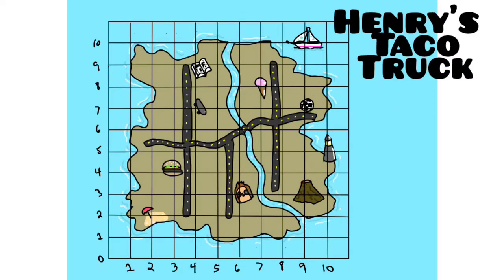Now I want you to pause the video and find a good ordered pair for Henry's taco truck. All right, let's check your work. So I started at the origin, the zero. I went over six on the x-axis, and up three on the y-axis, and so my ordered pair is six, three.